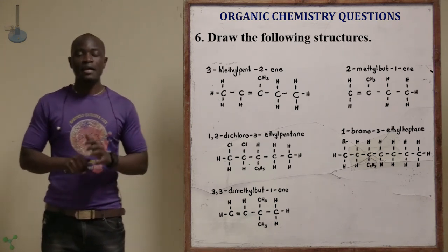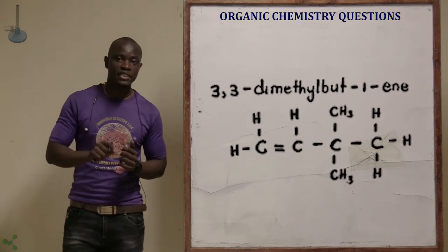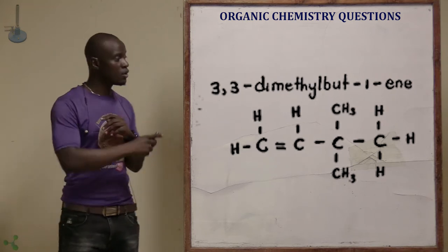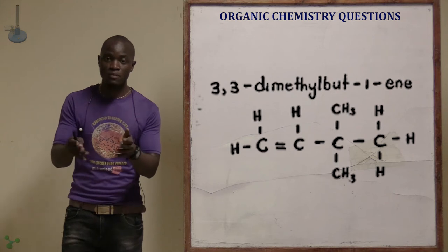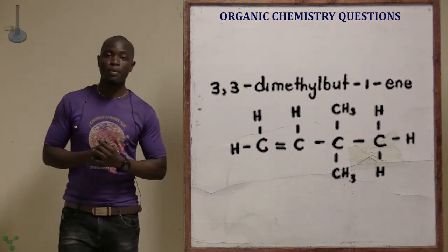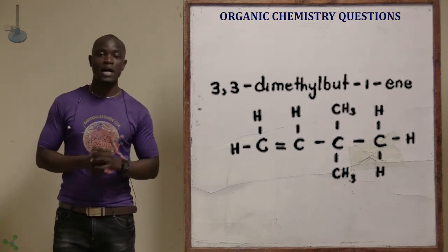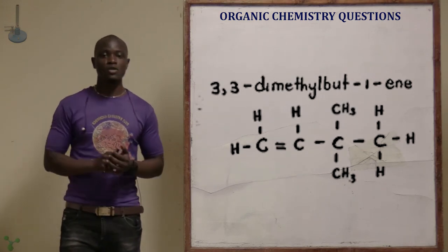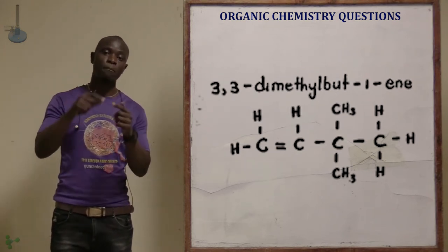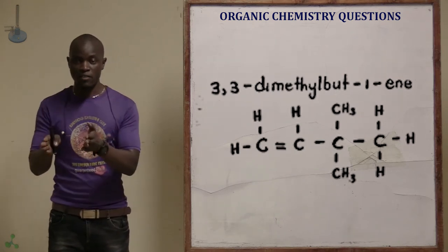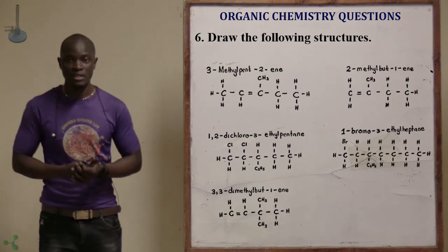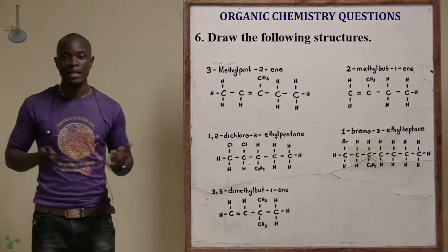Letter E is 3,3-dimethylbut-1-ene. But- means 4 carbon atoms; draw 4 carbons. This is an alkene, so draw the double bond at carbon 1. At carbon 3, draw a methyl group on one side, and another methyl on the other side, forming 3,3-dimethyl. Populate remaining covalent bonds with hydrogen atoms to complete the structure of 3,3-dimethylbut-1-ene.